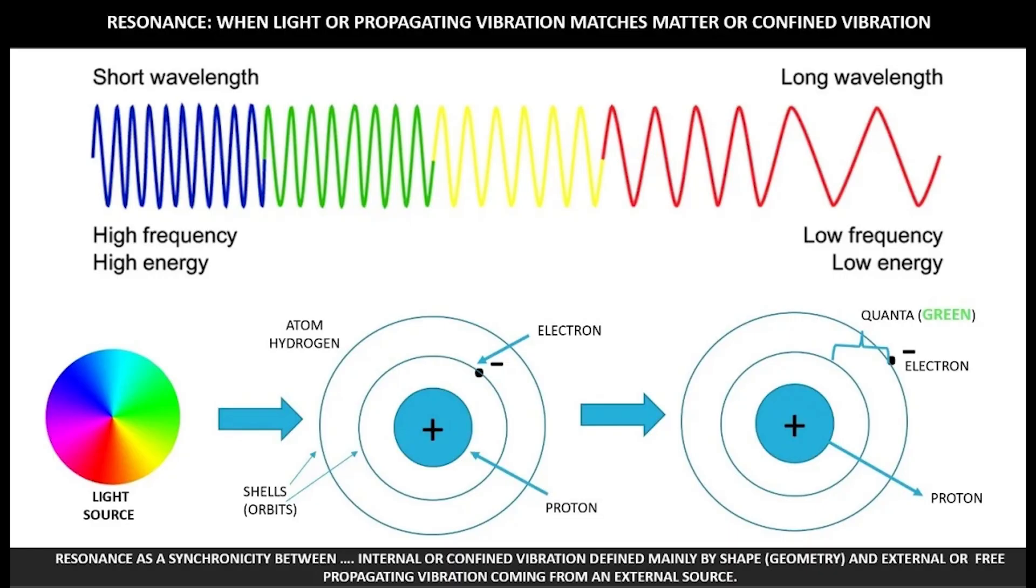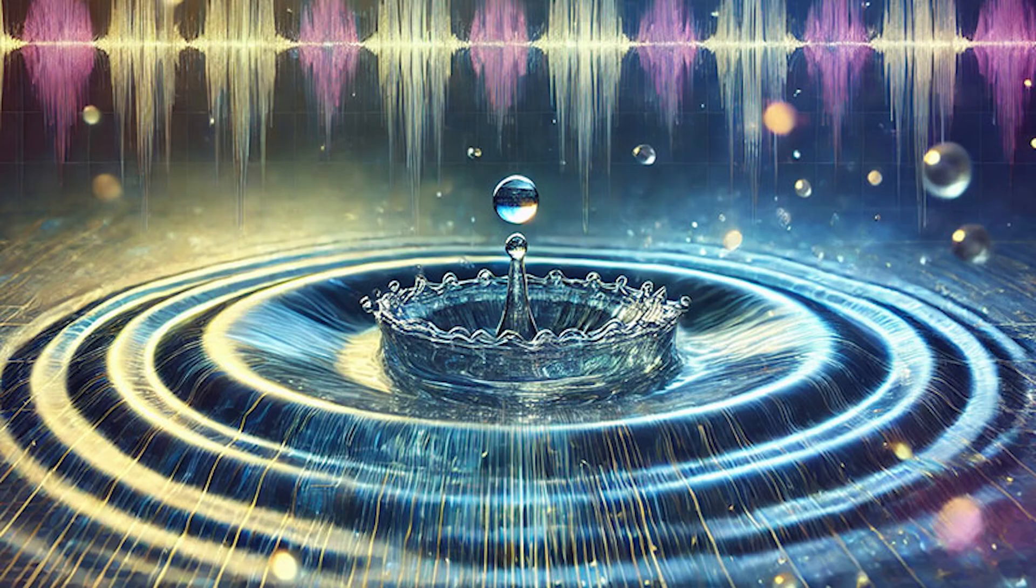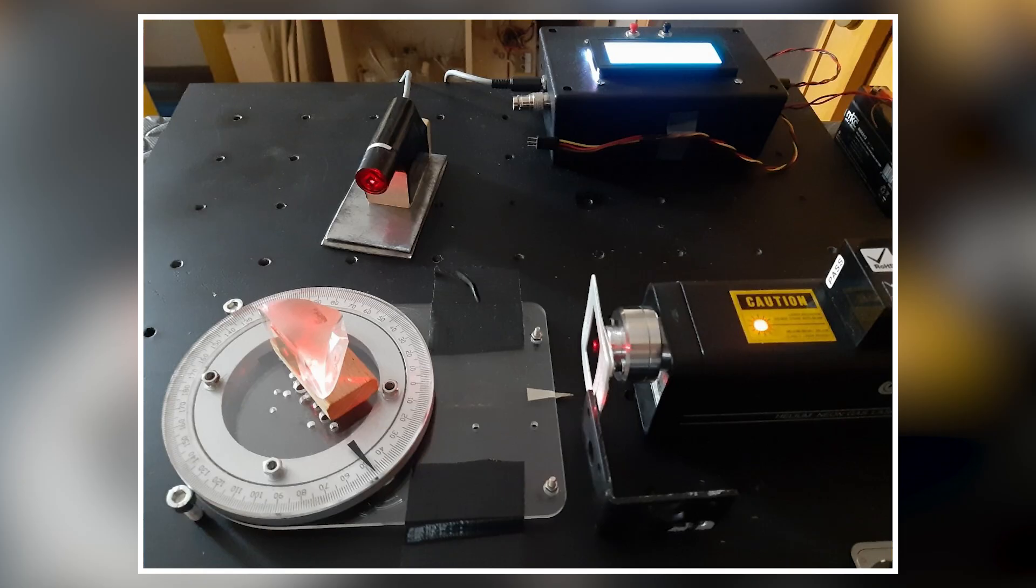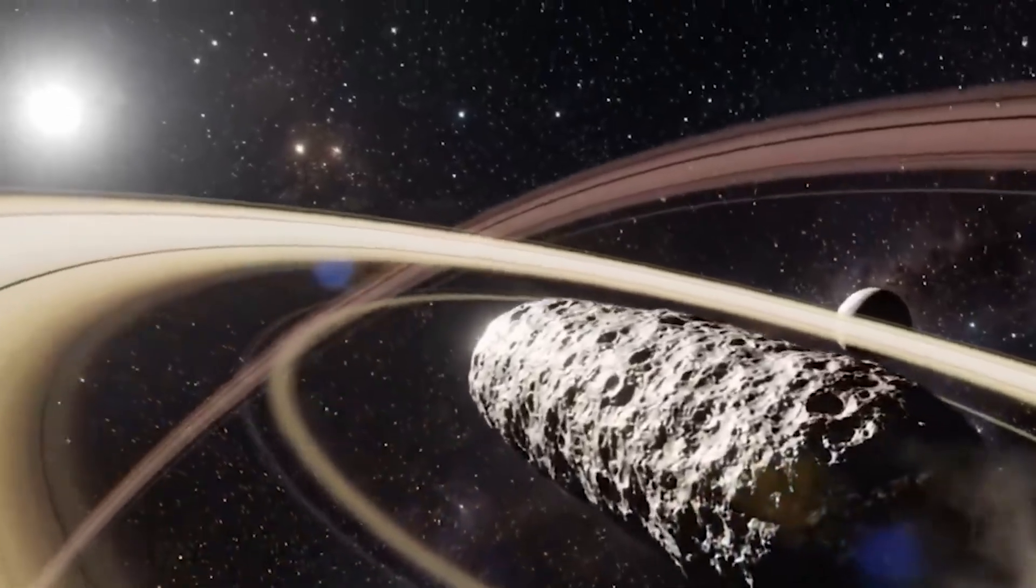These waves push anything nearby into predictable lines. We see this with sound, we see it with water, and sometimes we see it in plasma in laboratories. Seeing it around an interstellar object, that is what makes this special.